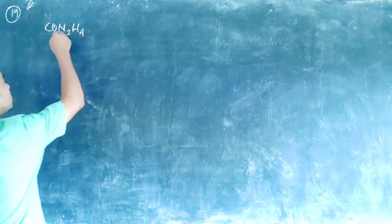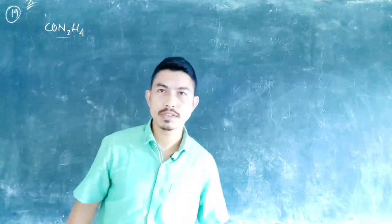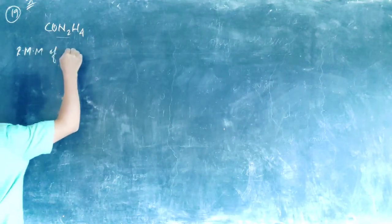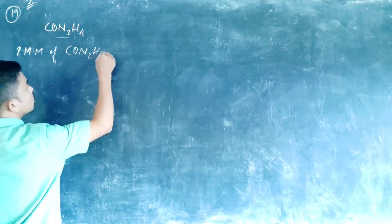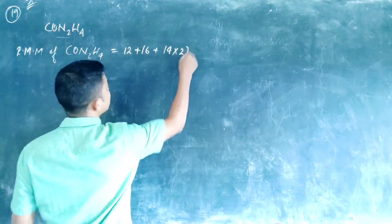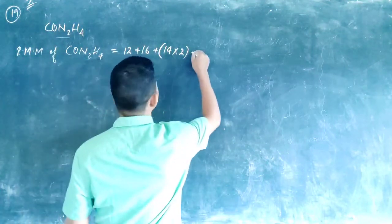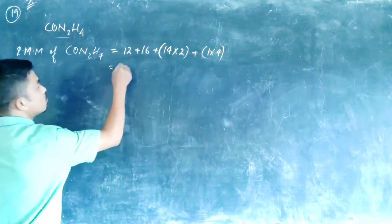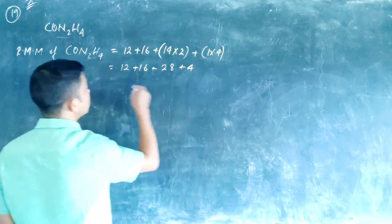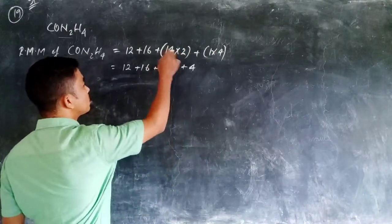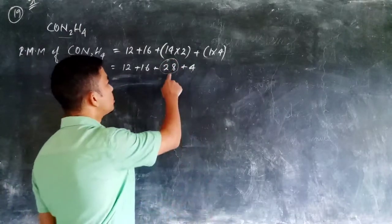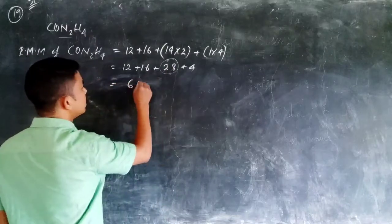We need to find what percentage of nitrogen is present in this compound. First, find the relative molecular mass of urea, CH4N2O. Carbon is 12, hydrogen is 1 times 4 equals 4, nitrogen is 14 times 2 equals 28, and oxygen is 16. Adding all these together gives 60 grams. So one molecule of urea has a molecular weight of 60 grams.